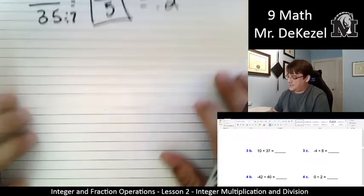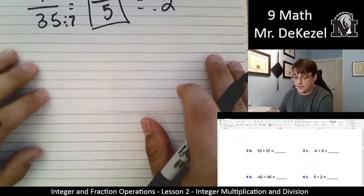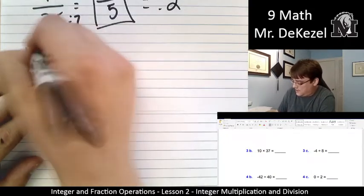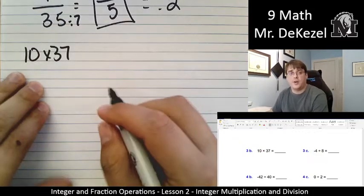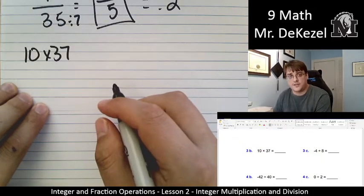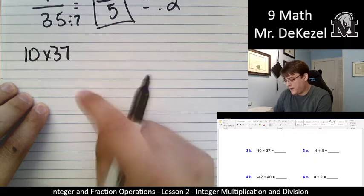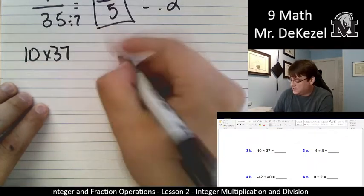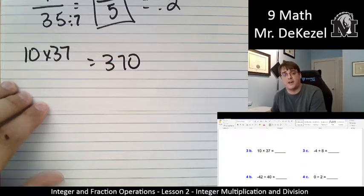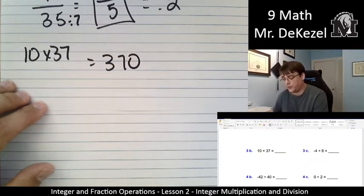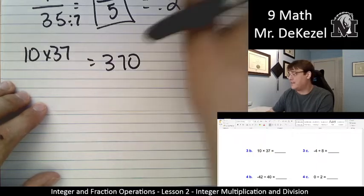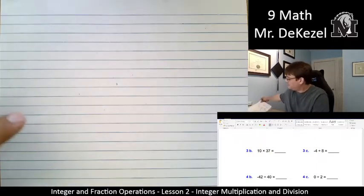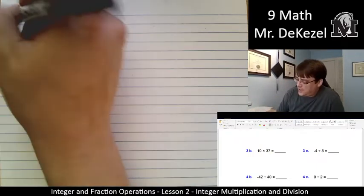We have 10 times 37. They're both positive, so our answer is going to be positive. And when I have 10 times something, I'm just going to move the decimal place over 1 to the right. So this is 370. And again, it's a positive number because they're both positive to begin with, 10 and 37. Let's do the next problem.